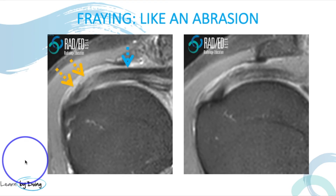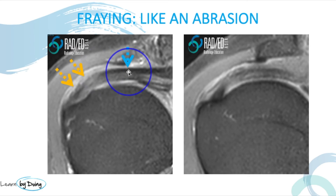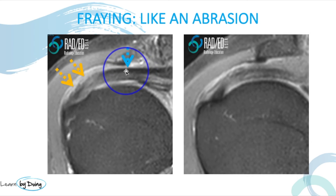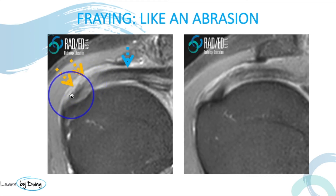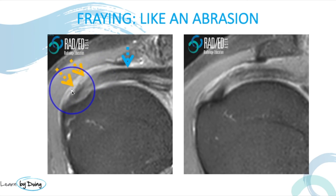Fraying is not a tear — you don't go and repair fraying. Think of fraying more like an abrasion: you've fallen and scratched the skin, it's not a complete cut, just an irregularity of the skin surface. Similarly, fraying is the same thing. Looking at the normal interface of the rotator cuff tendon, you see a nice sharp line, but as you move more laterally that line becomes irregular and ill-defined. This is the typical appearance of fraying. Fraying occurs on the bursal surface, not on the articular surface — you get an irregularity and ill-definition of the bursal surface fibers. But this is not a tear.